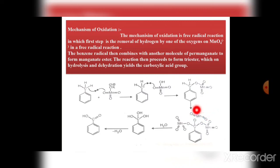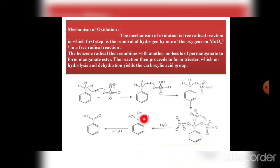The reaction then proceeds with the formation of a triester — three moles of permanganate ester are formed. This triester then undergoes hydrolysis and dehydration — removal of the water molecule — to yield the product, benzoic acid. This is the carboxylic acid group formed. Overall, the mechanism is a free radical mechanism.